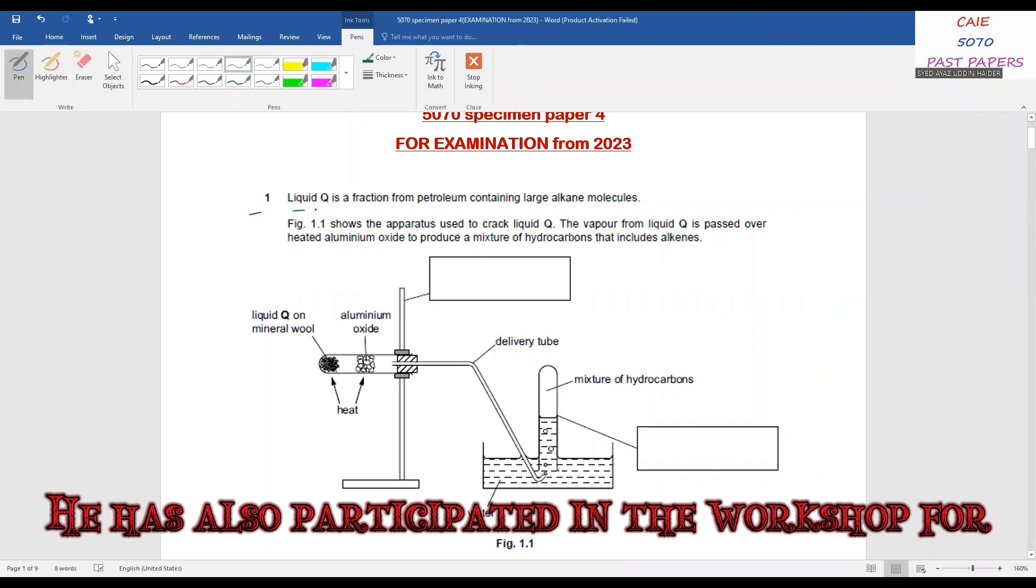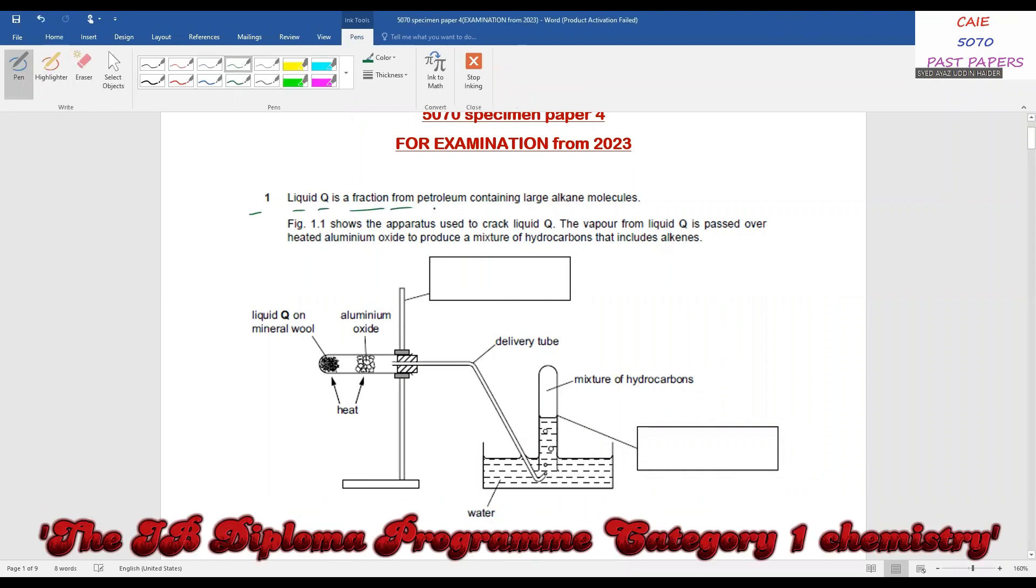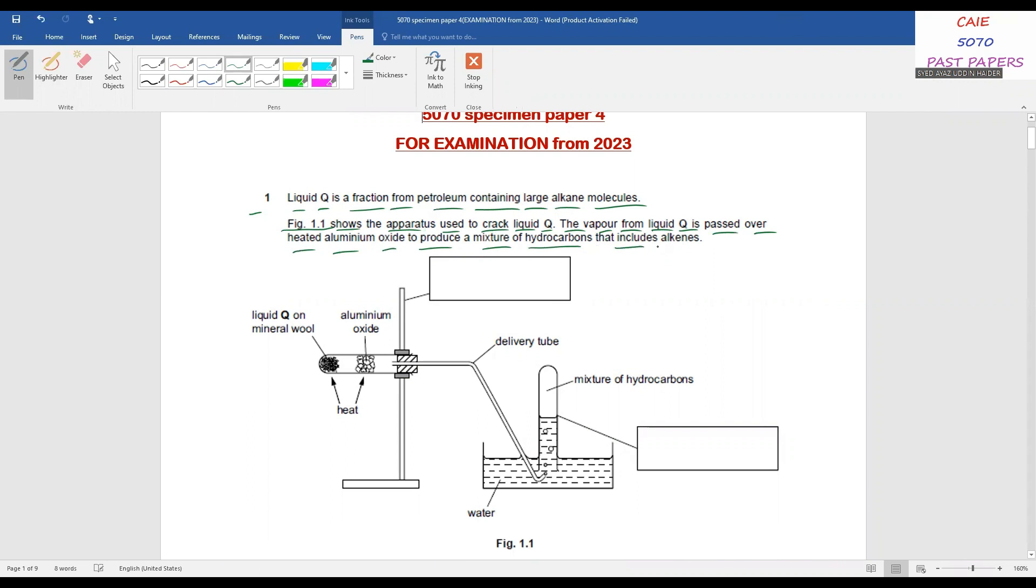Question number one: Liquid Q is a fraction from petroleum containing large alkane molecules. Figure 1.1 shows the apparatus used to crack liquid Q. The vapor from liquid Q is passed over heated aluminum oxide to produce a mixture of hydrocarbons that includes alkenes. So here's Figure 1.1. You see liquid Q on mineral wool, heat is provided, and there's aluminum oxide. Here we are having some empty boxes. We have a delivery tube, we have mixture of hydrocarbons collected in the boiling tube.